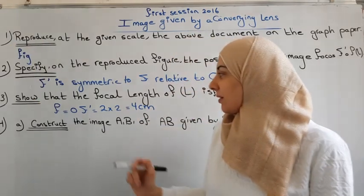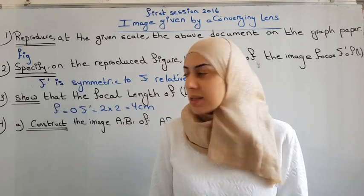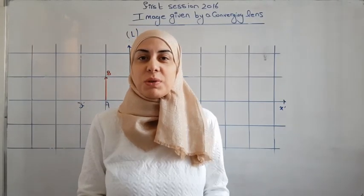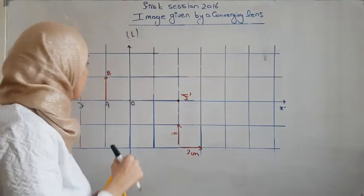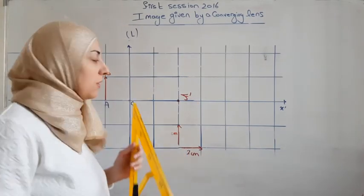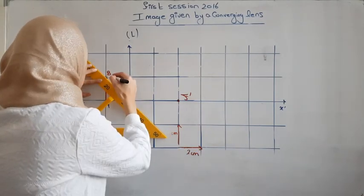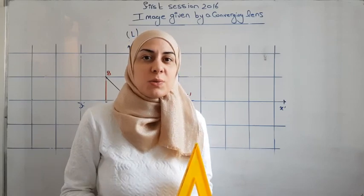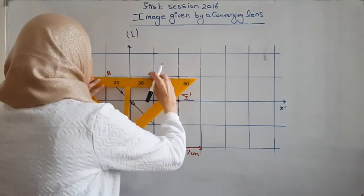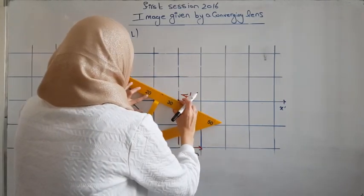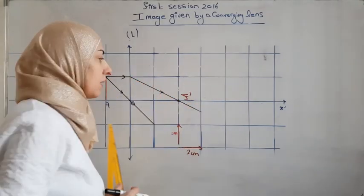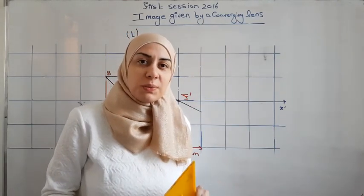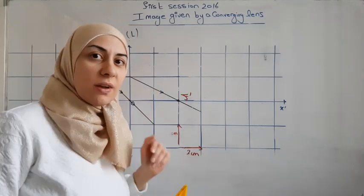We have to construct the image A1B1 of AB as given by the lens. Construct means we draw and justify the drawing. To construct image A1B1, we need two rays. The first ray starts from B and passes through O — this ray continues undeviated. The second ray starts from B and is parallel to the optical axis, then continues passing through image focus F'. The two rays cannot meet after the lens because they are separating, so we prolongate the two rays from the other side before the lens.